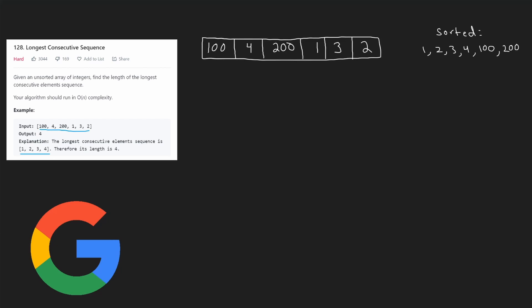The most obvious way to solve this problem is just by sorting. If you look at the sorted array we have one consecutive sequence of length four: 1, 2, 3, 4 — they're all consecutive numbers. We also have another one that's length one, just 100, and we have the last one that's also length one, just 200.